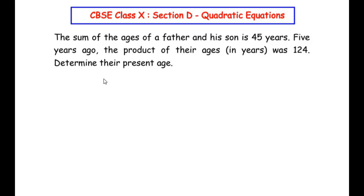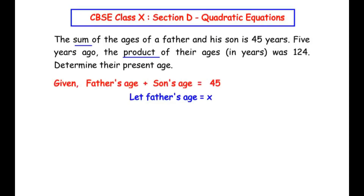We can see that two statements are given. The first statement is: the sum of the ages of a father and his son is 45 years. The second statement is: five years ago, the product of their ages in years was 124. Using these two statements, we have to generate two equations. Starting with the first statement, the father's age plus the son's age equals 45 years.